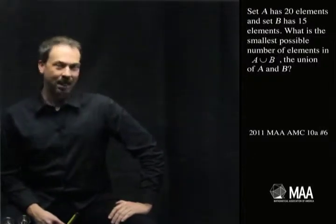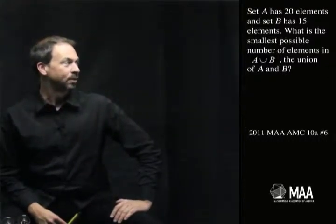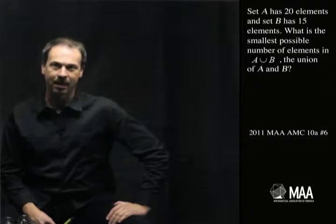It goes as follows: Set A has 20 elements and set B has 15 elements. What is the smallest possible number of elements in the union of A and B?